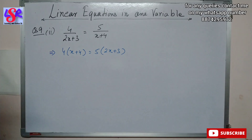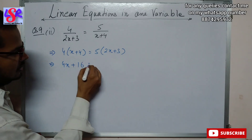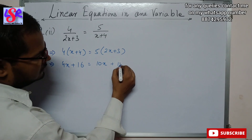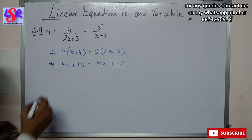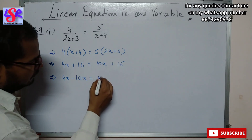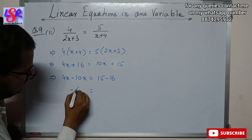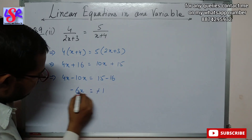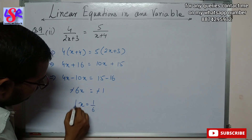Opening the bracket: 4x + 16 = 10x + 15. Putting variables on one side and constants on the other: 4x - 10x = 15 - 16, giving -6x = -1. The minus signs cancel, giving x = 1/6 as the answer.